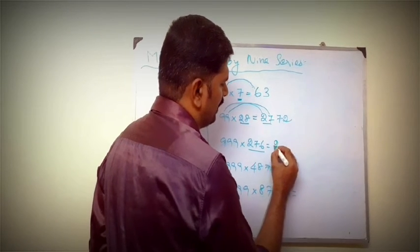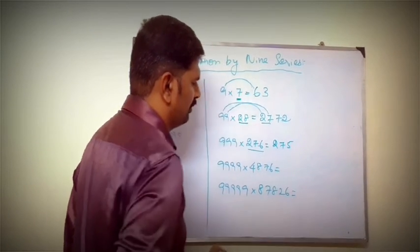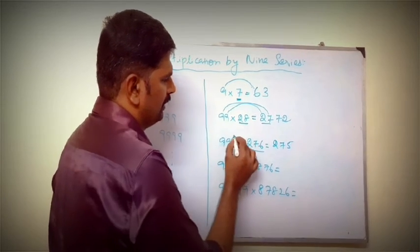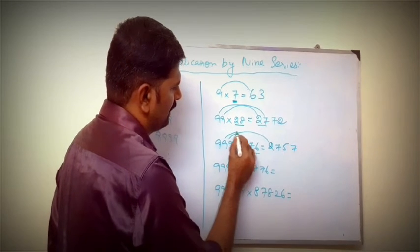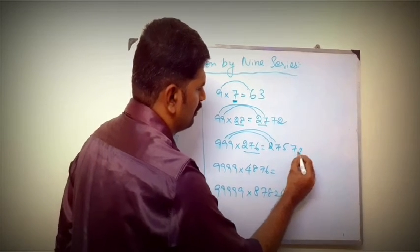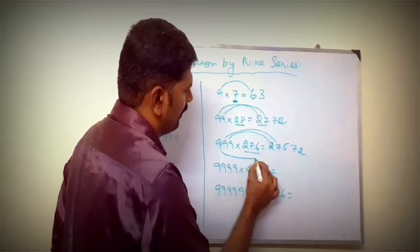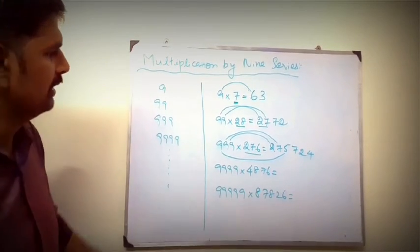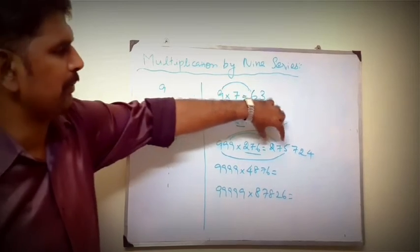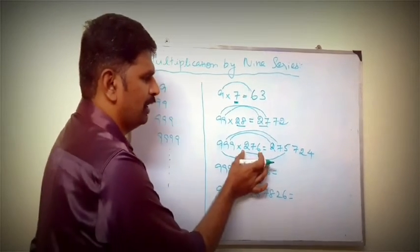2-digit number is 275. 9 minus 2 is 7, 9 minus 7 is 2, 9 minus 5 is 4. Remaining 3 digits. 3-digit number is 29, subtract, subtract, subtract.